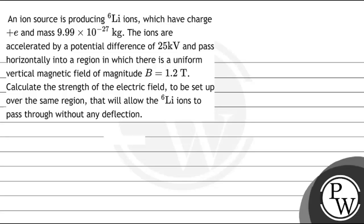Let's read this question. The question says an ion source is producing lithium ions which have charge plus e and mass 9.99 times 10 to the power minus 27 kg.